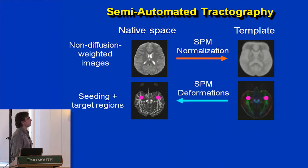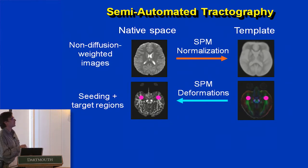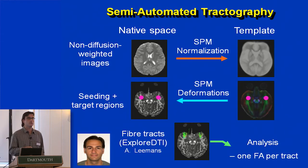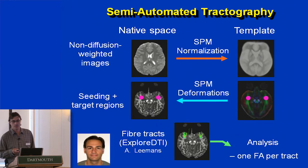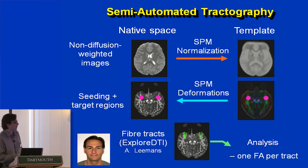For large populations we've developed more automated, semi-automated tractography. We normalize diffusion-weighted images, put seed regions on a template, deform those seed regions for tractography, and then do fiber tracking in native space for all subjects. Some of our projects have 400 or 500 subjects, and if we want to look at 20 tracts per person times 400 subjects, it's going to take the grad student a long time. We use Alexander Lehman's modified Explore DTI software to extract tracts across all subjects and calculate FA, MD, or other parameters for each tract.